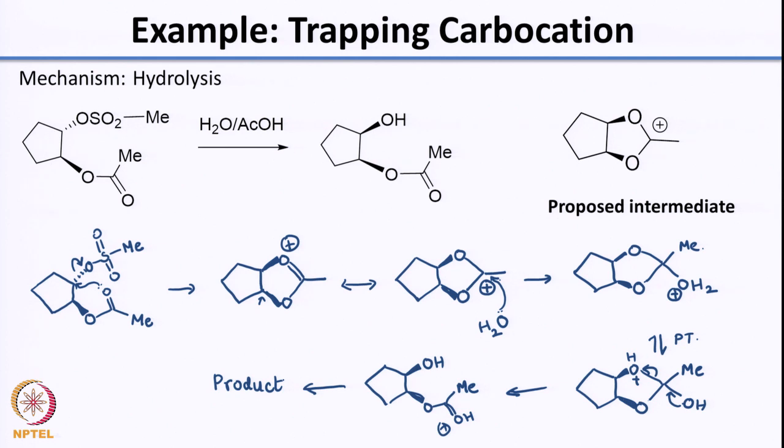Now what you see is the stereochemistry, which here is dictated by the neighboring group. You can always argue that writing a direct displacement by an SN2-like mechanism would give the same result, and I would say no, it has to go through this intermediate. To resolve this, we would need some experiment to prove either of these mechanisms. We have done several experiments so far which could be useful in proving these mechanisms — you can think about what experiments you can use for proving which mechanism it is.